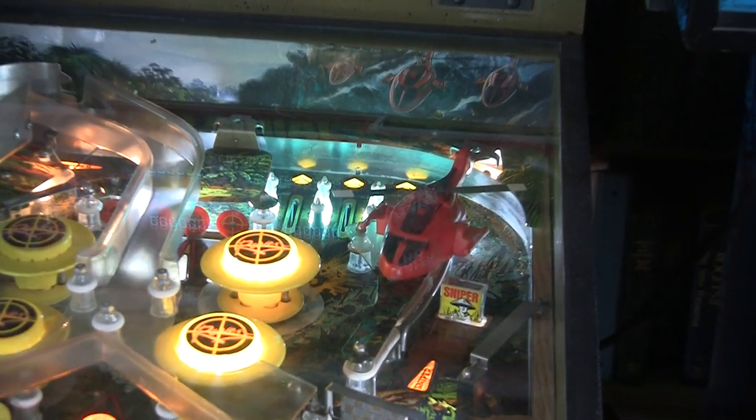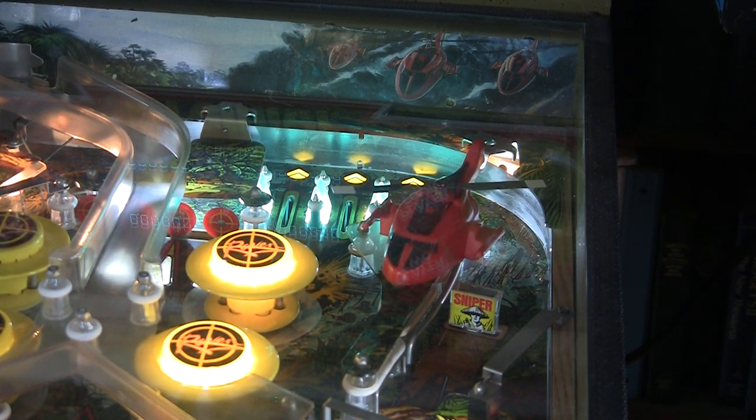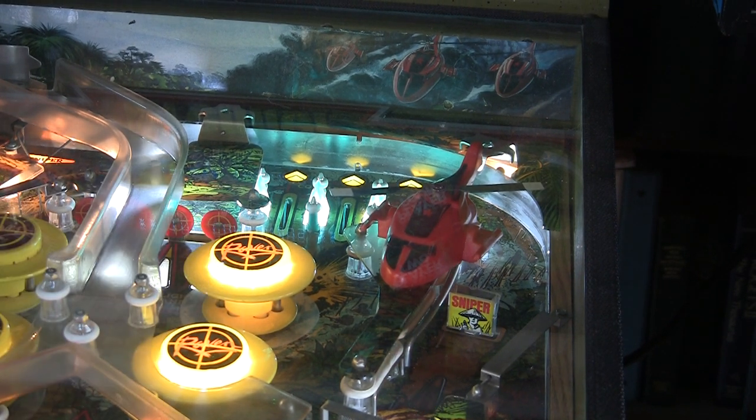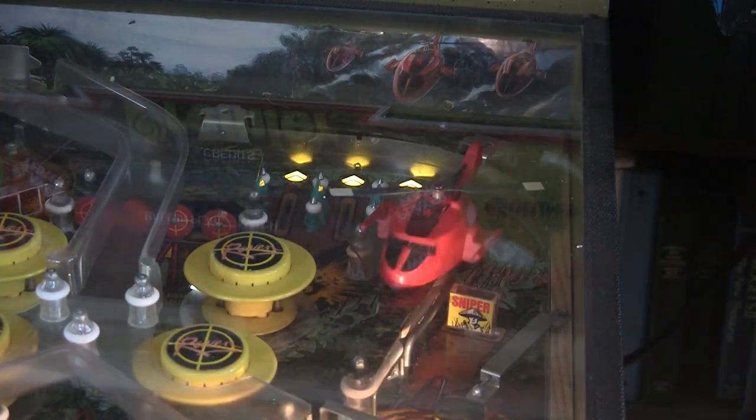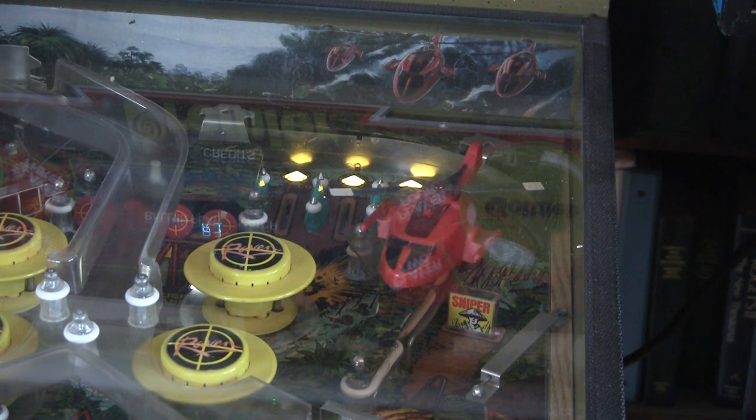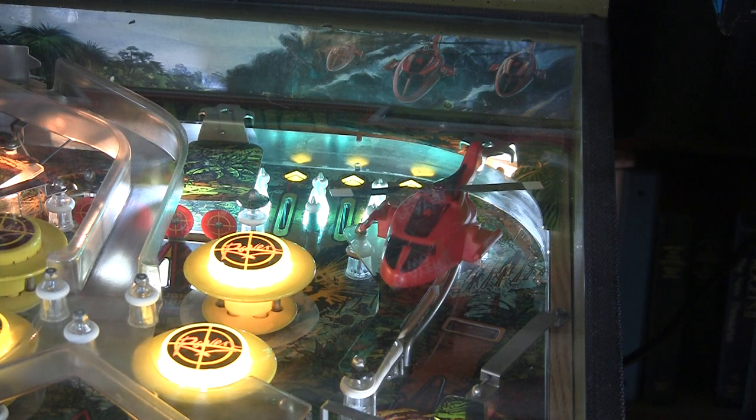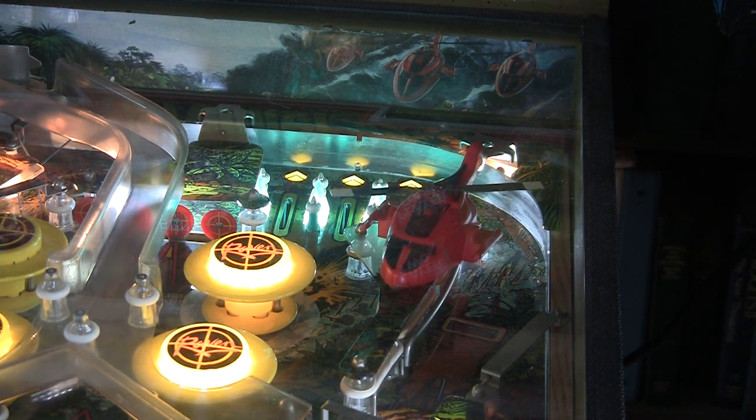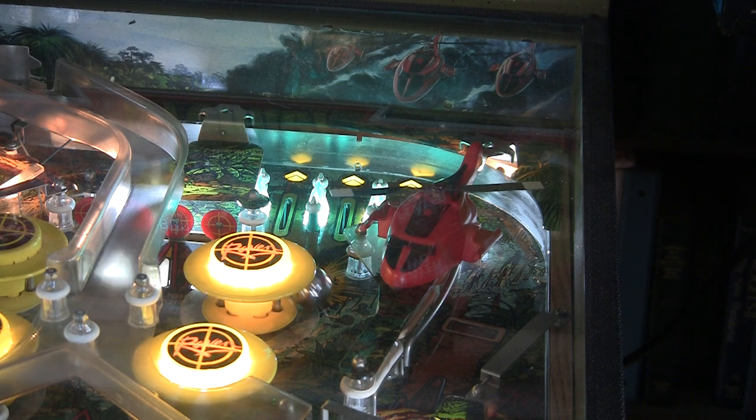So this is the top half of the playfield. You'll see in the attract mode, all the lights are blinking and animated, except for those three at the rollover ones. Check it out. They stay on while everything else doesn't. So you see at the top, those lights are supposed to go out when you roll over them.